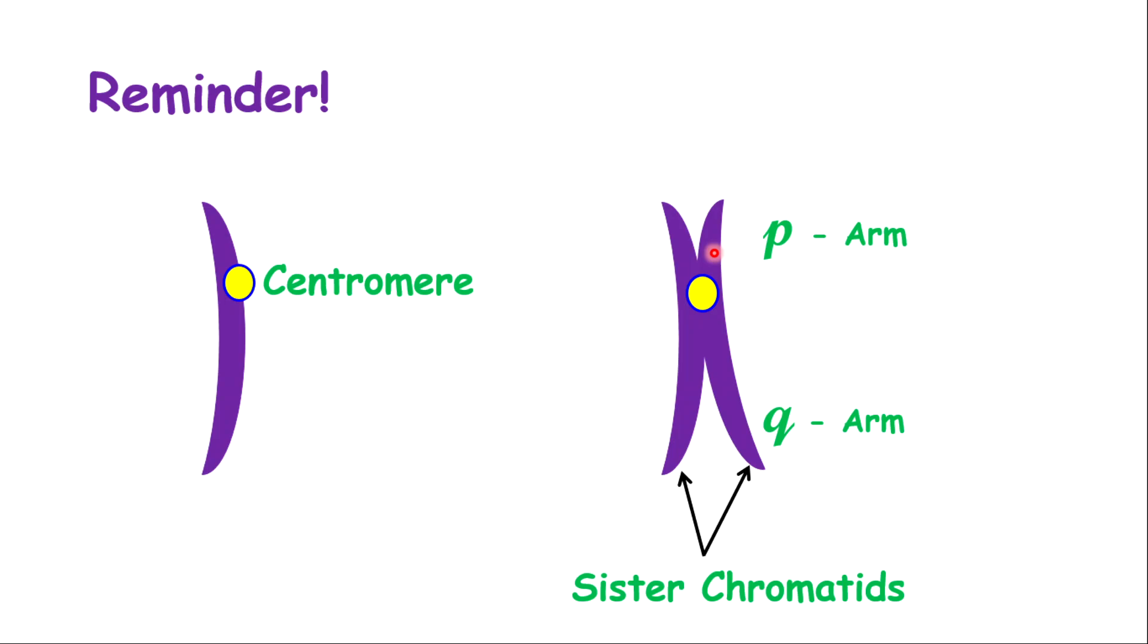Importantly, the chromatids have two arms. You have a short arm, which is called a P arm, and you have a longer arm, which is called a Q arm. Easy way to remember it: Q has an extra tail compared to the P, so it's longer, representing the longer arm.